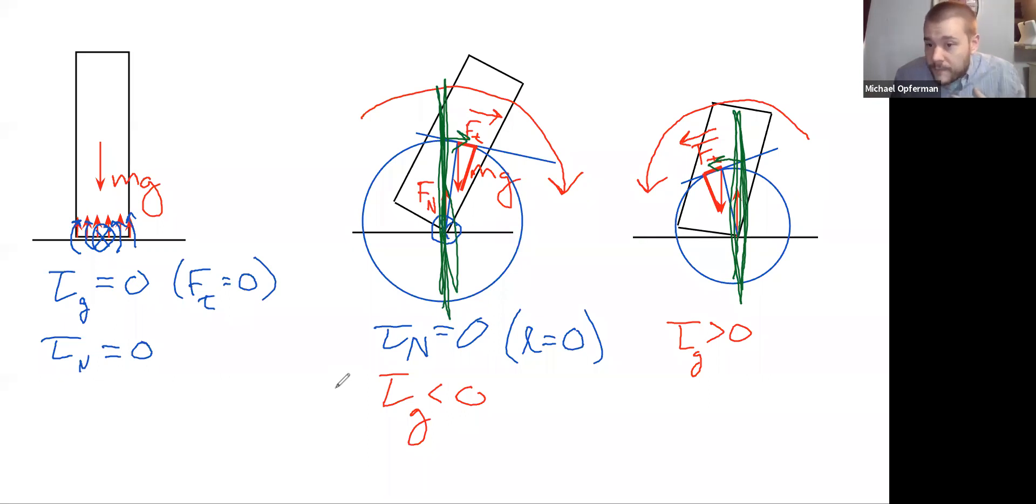For instance, with the human body, if someone starts leaning their body to one side, you can picture their center of mass moving as they lean their body. And if the center of mass is over the person's foot, they'll be stable. And if the center of mass goes outside of the person's foot, then there's going to start to be a gravitational torque, which could cause them to tip over.